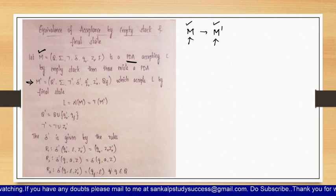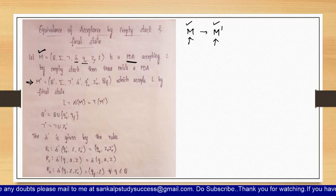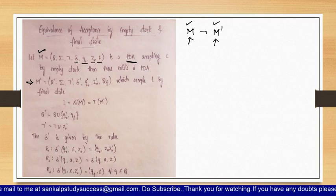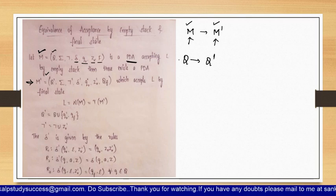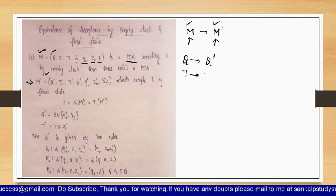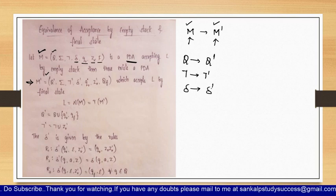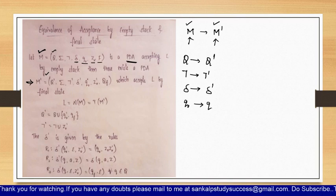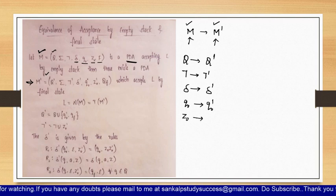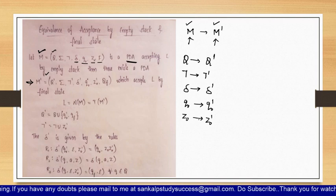Q is the set of states, sigma is the input alphabet, gamma is the stack alphabet, delta is the transition function, Q-naught is the initial state, Z-naught is the top of the stack, and F is the set of final states. When converting to M-dash, accepted by final state, the set of states changes to Q-dash, sigma remains the same, but the stack alphabet becomes gamma-dash, the transition function changes, and Q-naught-dash and Z-naught-dash are introduced.